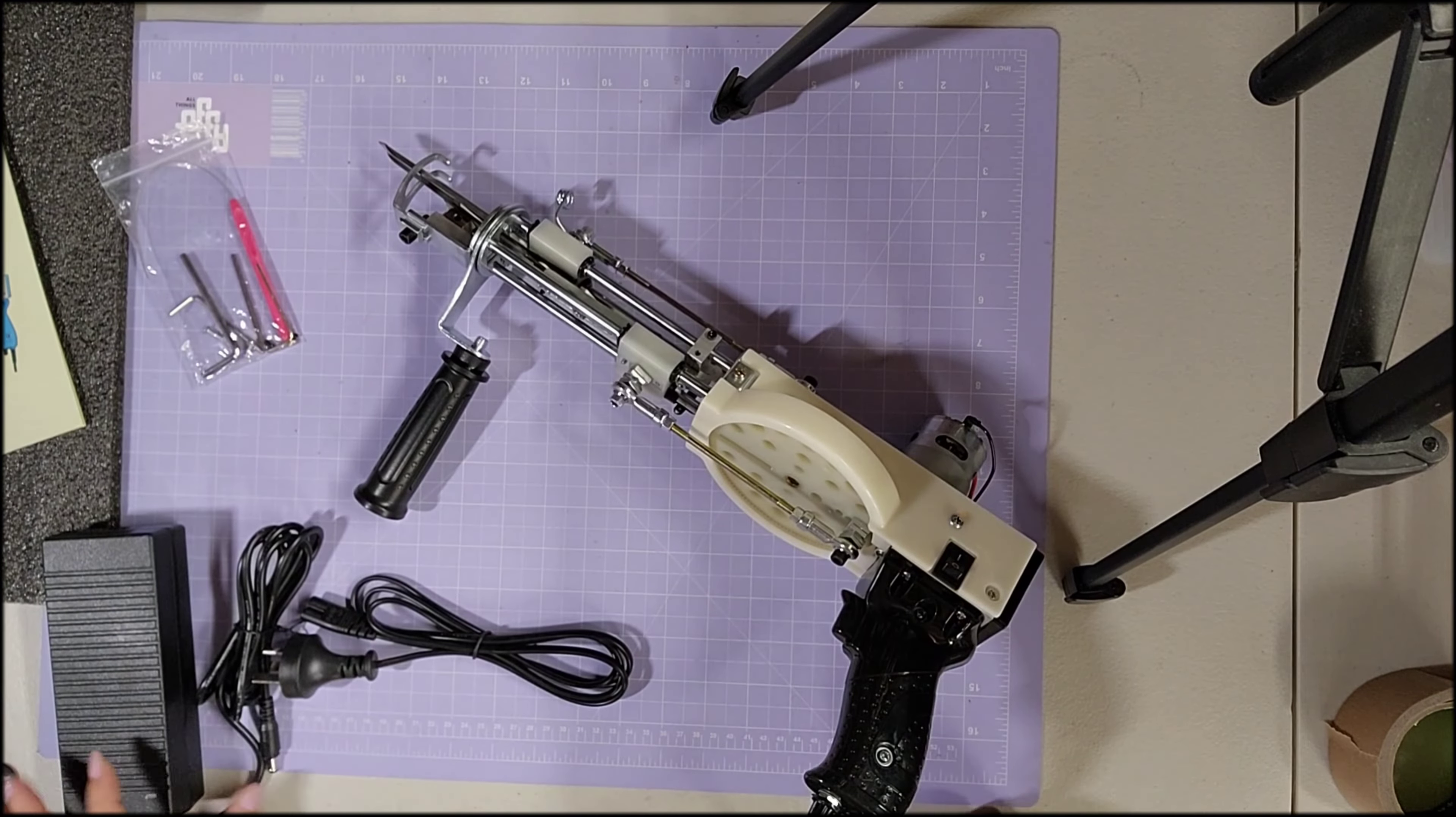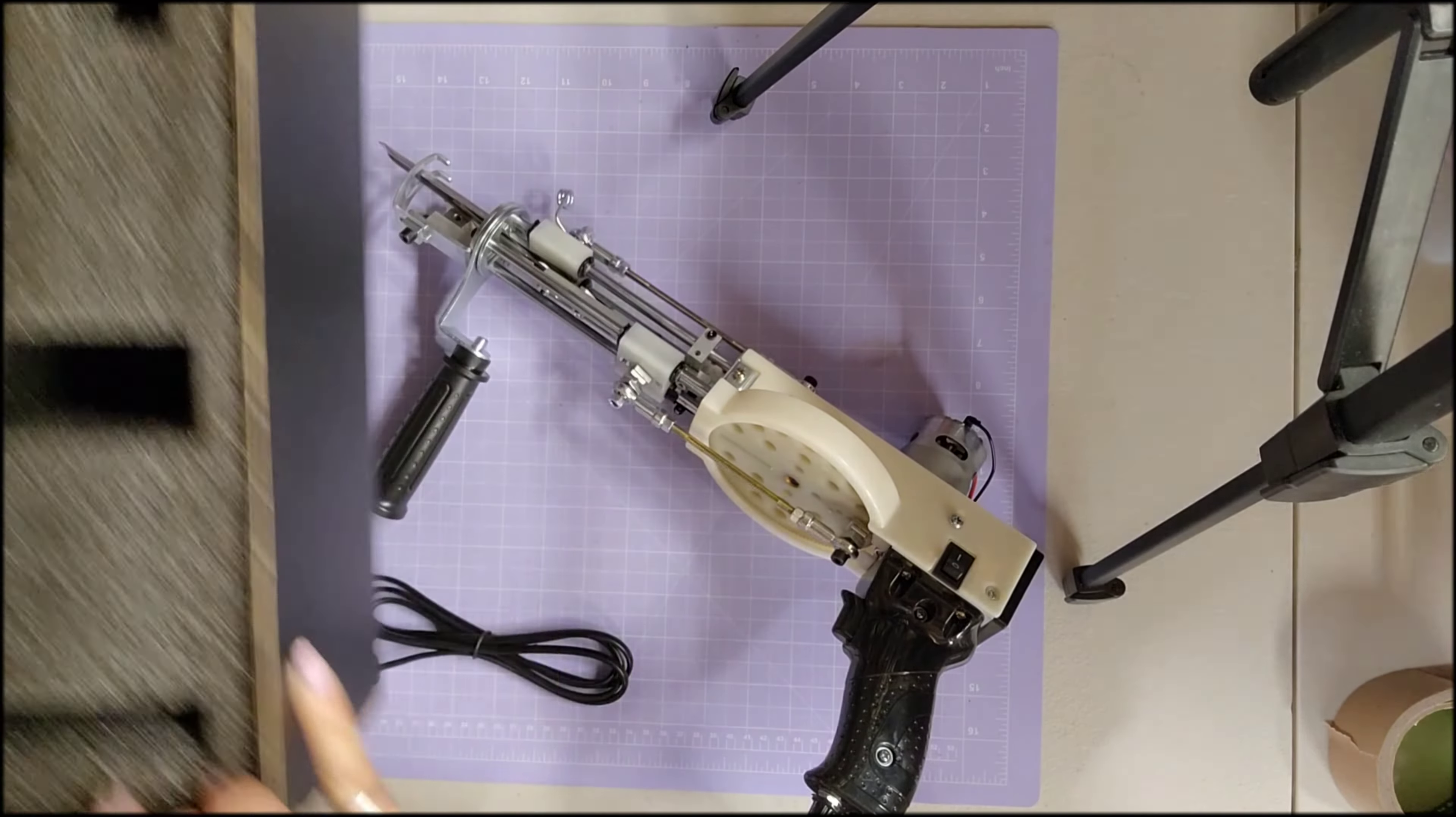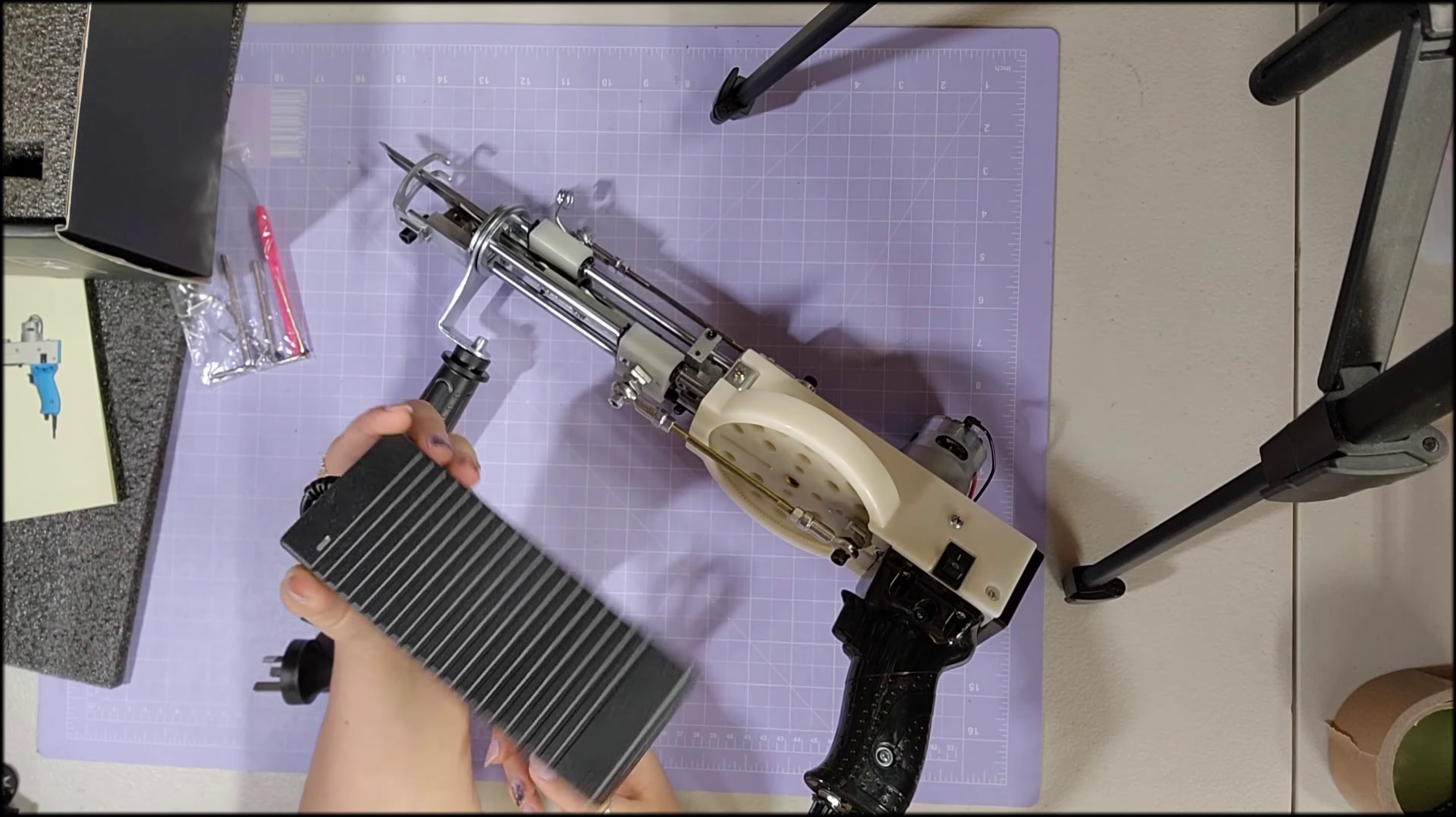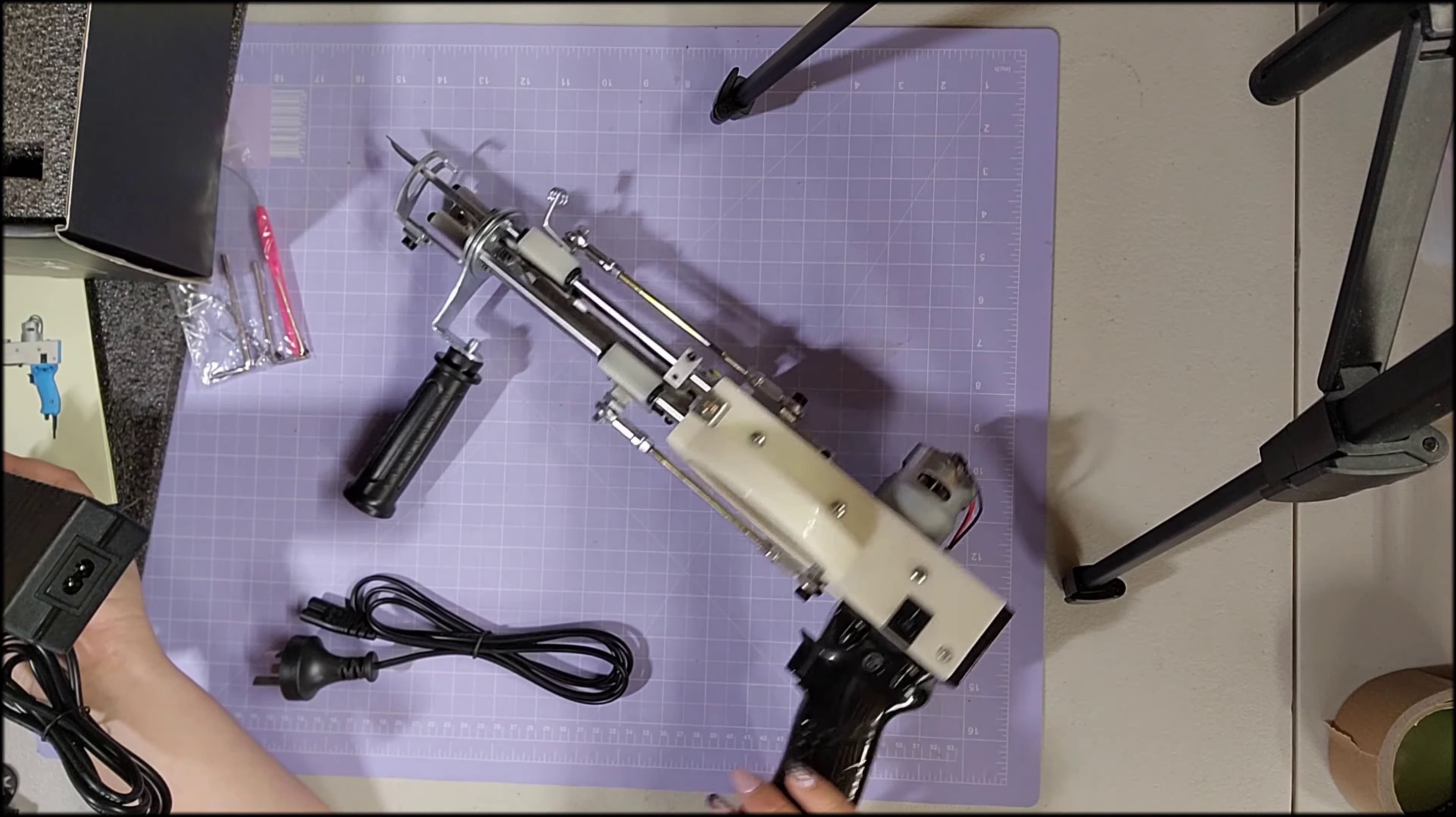So you get the gun, obviously, in a lovely box with a nice foam insert for storage. You get your adapter that goes to your wall outlet. This converts the AC current from your wall into DC current for the machine and the motor.